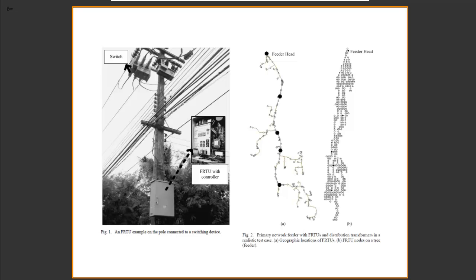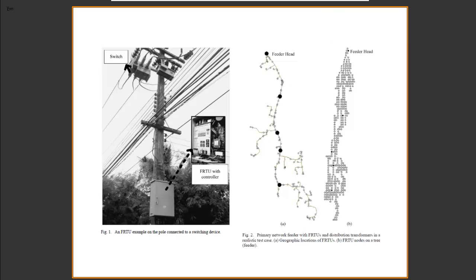However, this picture doesn't include smart meters. The little circles around the curves indicate there is no further information beyond the distribution transformer — only the primary network is included, not the secondary part of the distribution network. If there is no AMI metering infrastructure, it's not possible to find out the individual load for each customer.